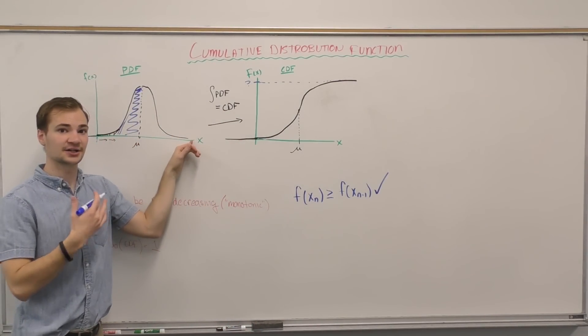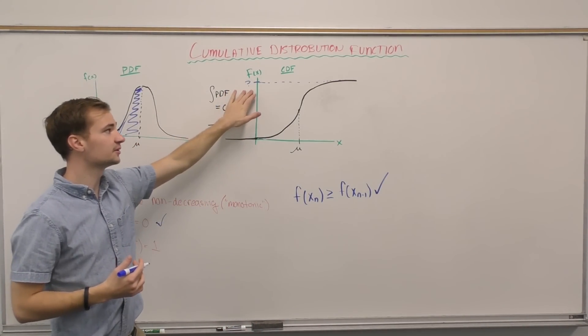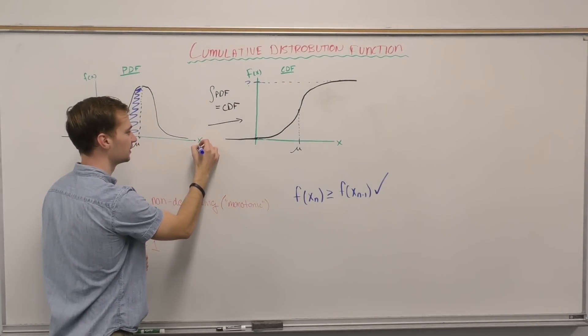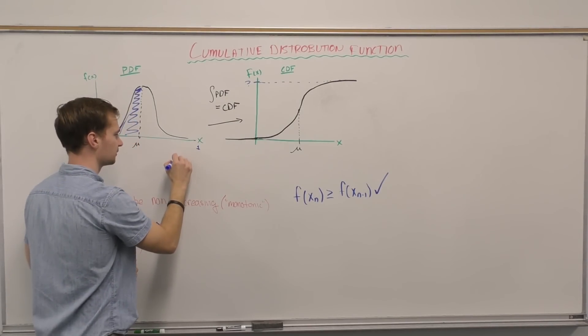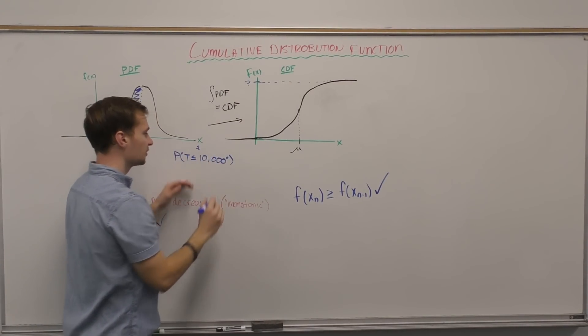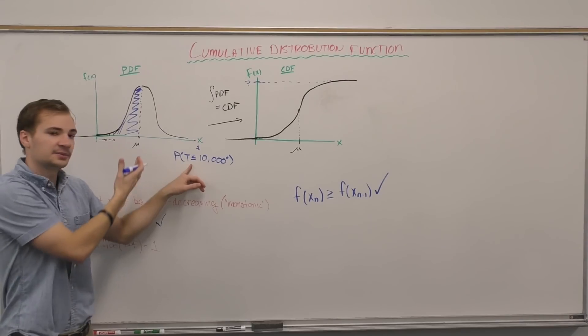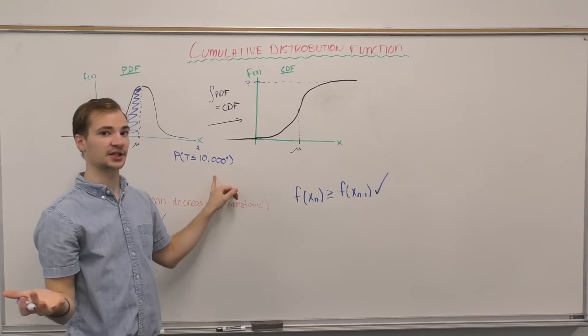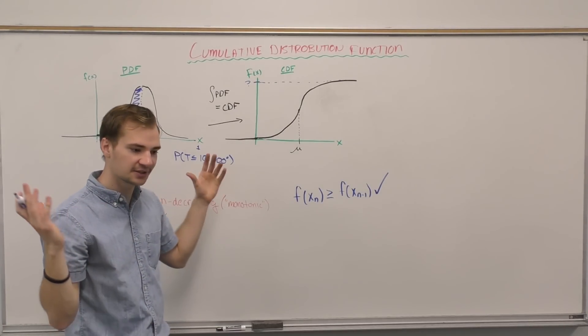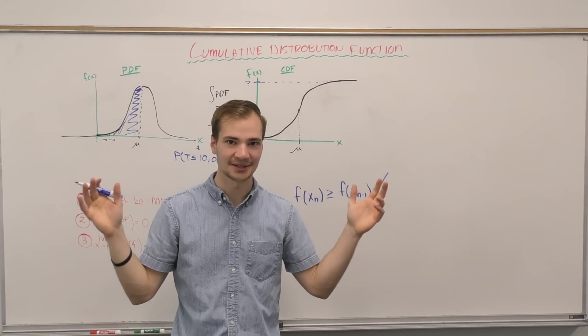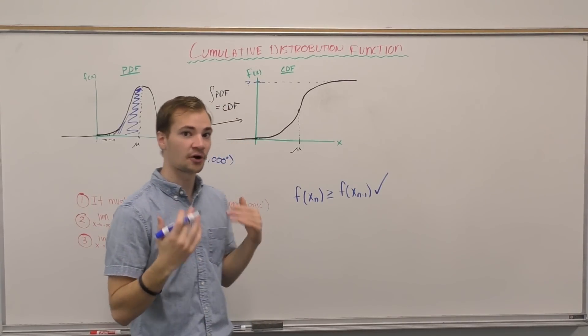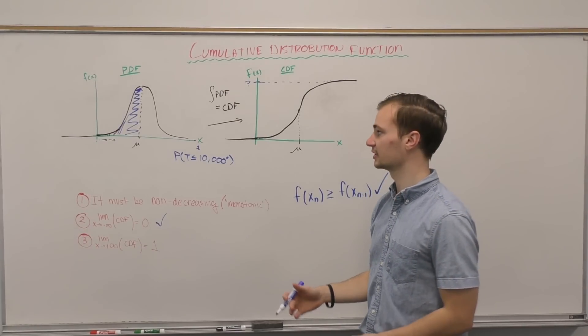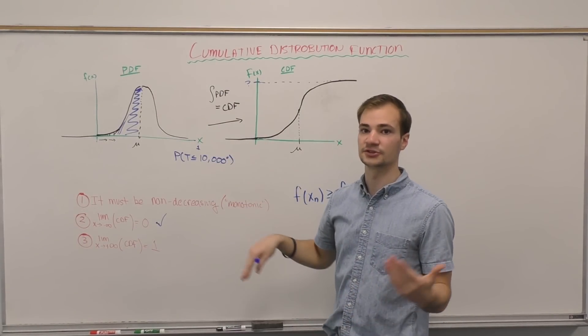We're never going to go higher again. And so the probability of the accumulated area up until this point is equal to one. In other words, the probability of the temperature in Arizona being less than 10,000 degrees is 100%. Now technically, it might be 99.99999%, but for all intents and purposes, and that's what the limit takes account of—remember, for all intents and purposes—the limit approaches one.